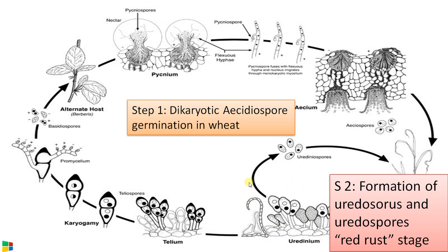Uredospores are formed in numerous numbers, released by the rupturing of the epidermis, and infect other wheat plants in the field. They are also transferred to neighboring wheat fields, causing secondary infection. So uredospores are involved in causing secondary infection of Puccinia. These spores are two-celled, binucleate, oval-shaped, with a spiny wall.